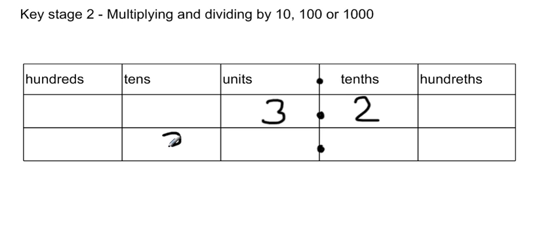the units would move into the tens and become 30. The tenths then move into the units, so you get two units. So 3.2 multiplied by 10 equals 32.